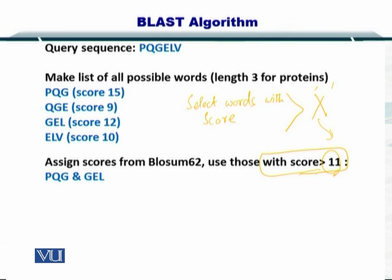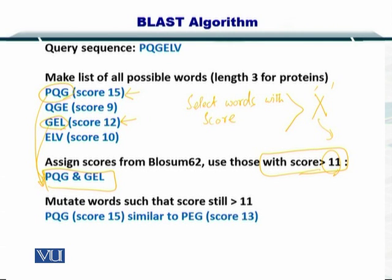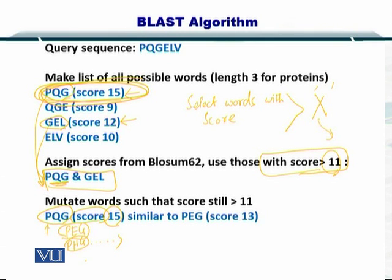The threshold essentially means that we select those words which have a score greater than some value X. In this case, X has been chosen to be 11. The only two words that have a score greater than 11 are PQG and GEL, so you select them. Once you have selected these words, you need to mutate them — PQG needs to be mutated such that one amino acid is changed at a time, so PQG can become PEG, PHG, and many others. The mutated words are also scored, and you will find that PEG has a score of 13.